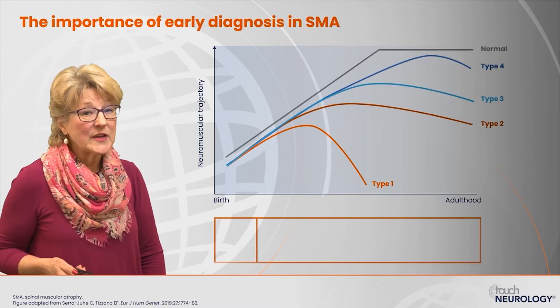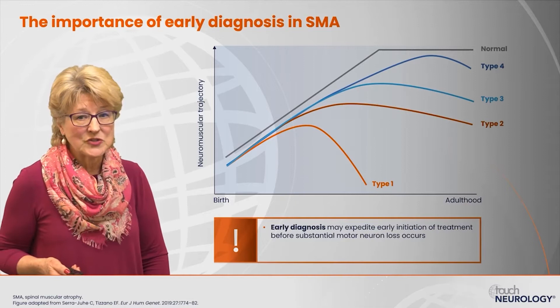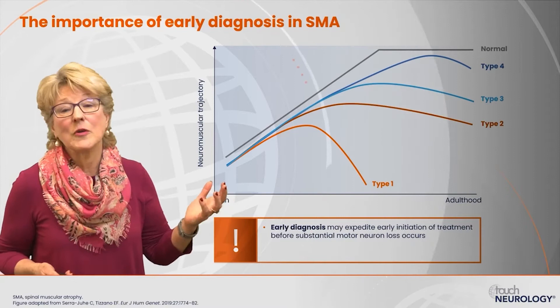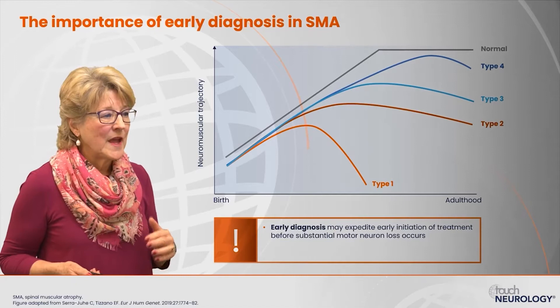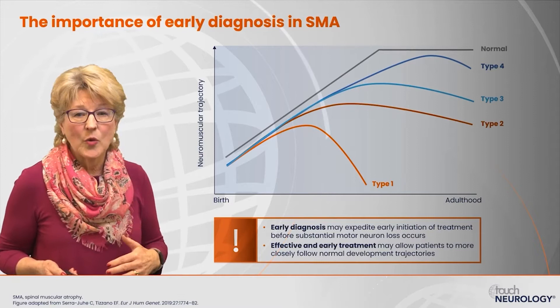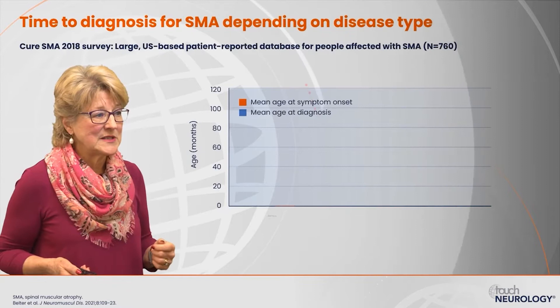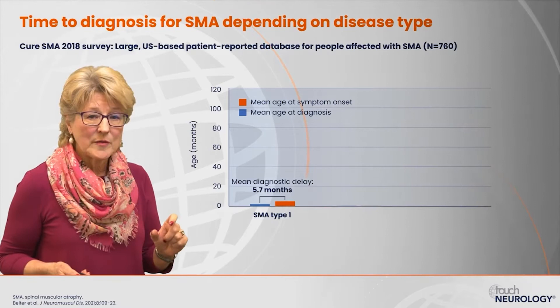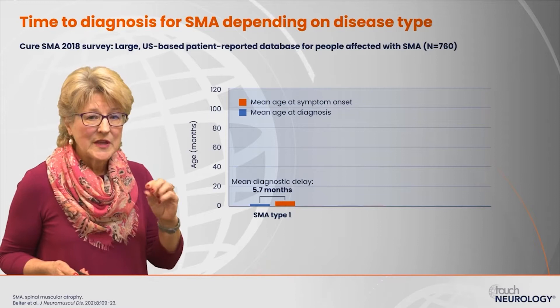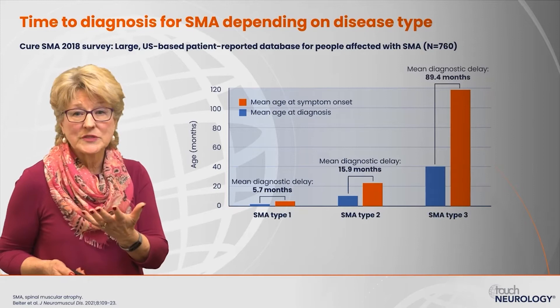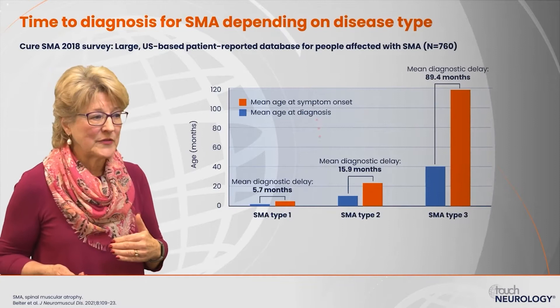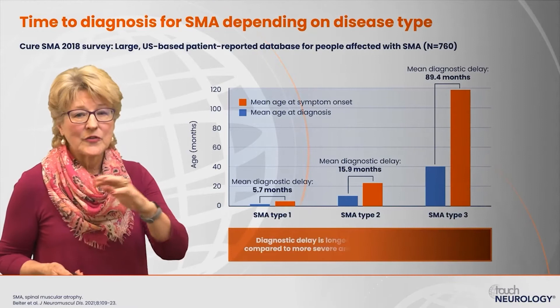Early diagnosis may expedite initiation of treatment before there is substantial motor neuron loss. Once motor neurons are lost, we don't have the ability to regain function, so we want to catch the disorder early. Effective and early treatment may allow patients to more closely follow a normal developmental trajectory. Time to diagnosis depends on the disease type — in a Cure SMA survey from 2018, delay to treatment was very short for type 1 patients but potentially years for type 3 patients. The milder the form of SMA, the more discrepancy between onset of symptoms and actual diagnosis.